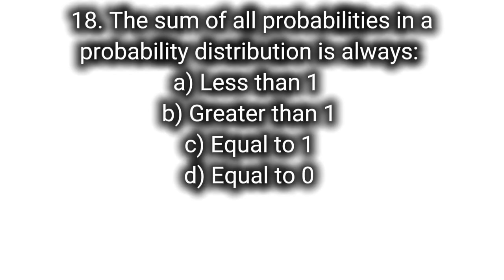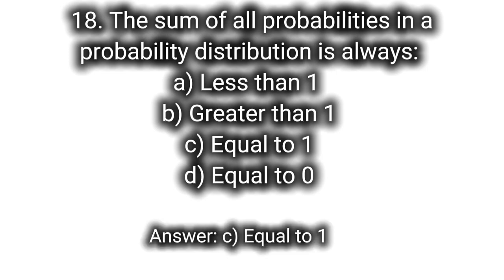Q18: The sum of all probabilities in a probability distribution is always A. Less than 1, B. Greater than 1, C. Equal to 1, D. Equal to 0. Answer: C. Equal to 1.